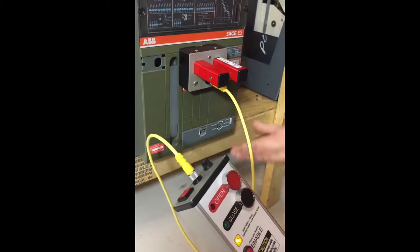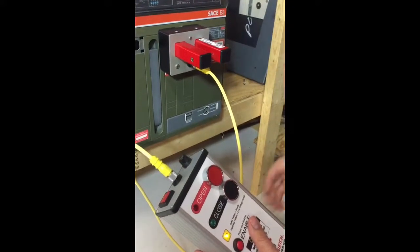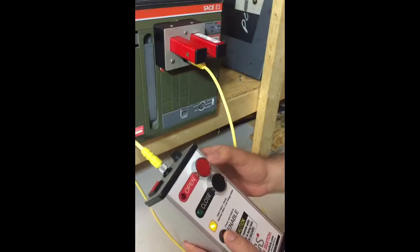Now if something were to go wrong downstream I could quickly re-open the breaker. Again, I would not have to re-approach the breaker to do this. I'll hold the enable button and open it.